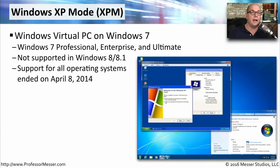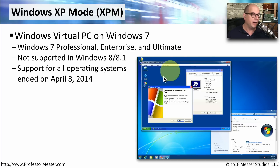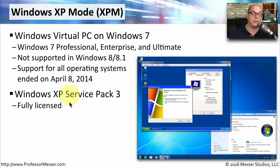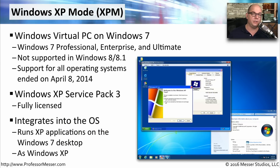In some rare cases, compatibility mode may not be enough, and you may need to run a full operating system to use a particular application. Windows 7 allowed a functionality called Windows XP Mode, or XPM, which effectively ran Windows Virtual PC — a completely virtualized operating system on Windows 7. It's available on Windows 7 Professional, Enterprise, and Ultimate, but not supported on Windows 8 or 8.1. Because Windows XP is no longer supported by Microsoft, this functionality is no longer supported after April 8th, 2014. When supported, it ran Windows XP Service Pack 3, either as a single application icon that looked like a normal Windows 7 app, or as a full separate XP desktop alongside your Windows 7 desktop.